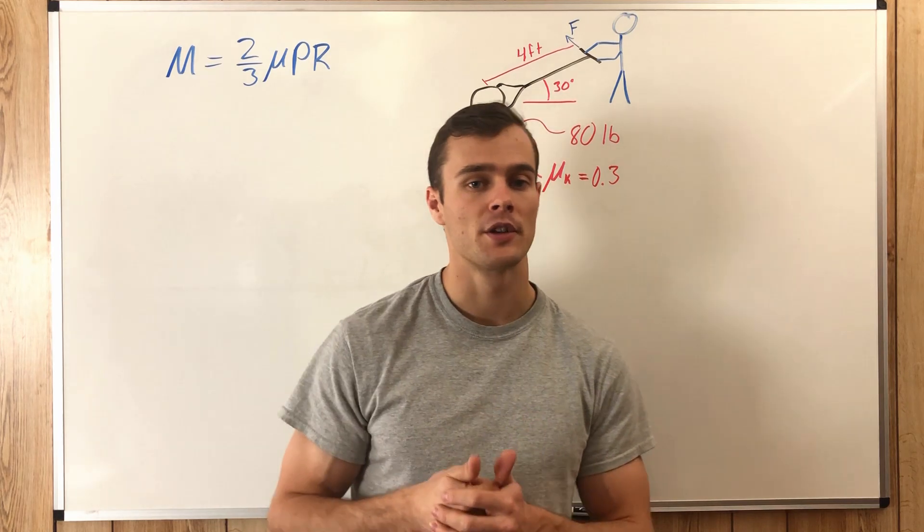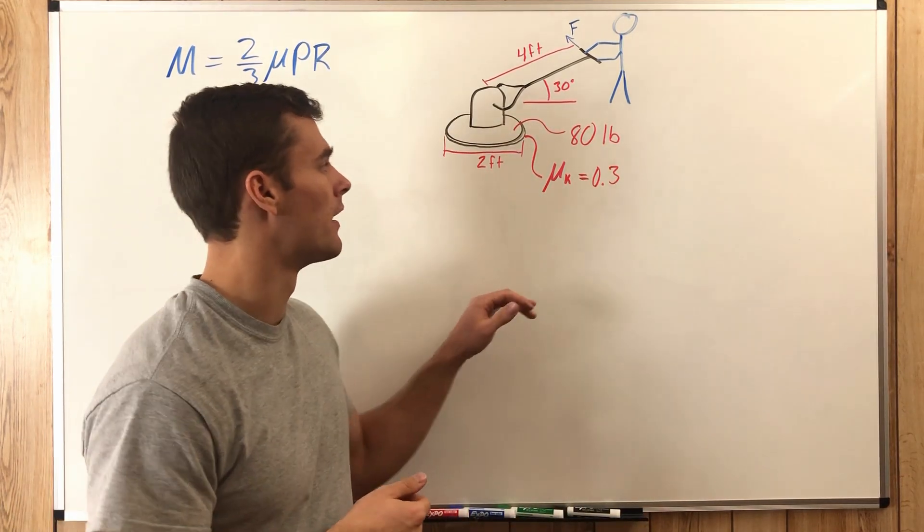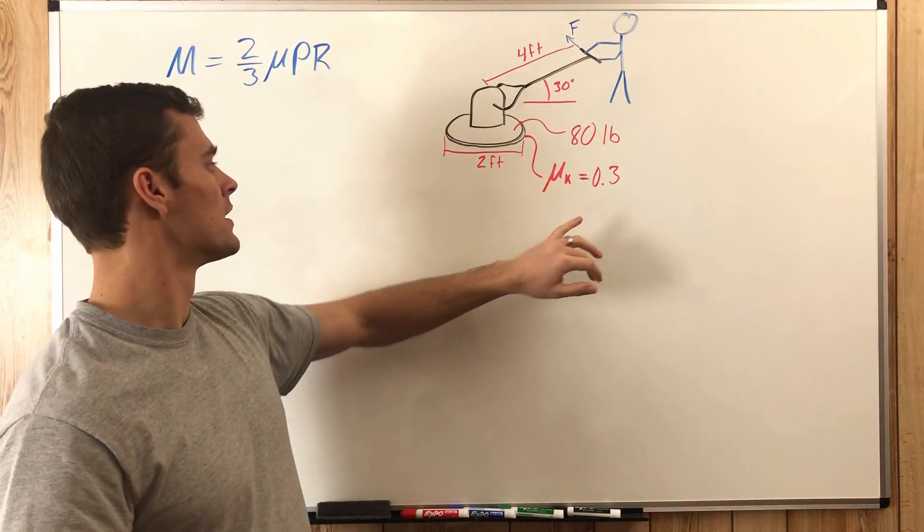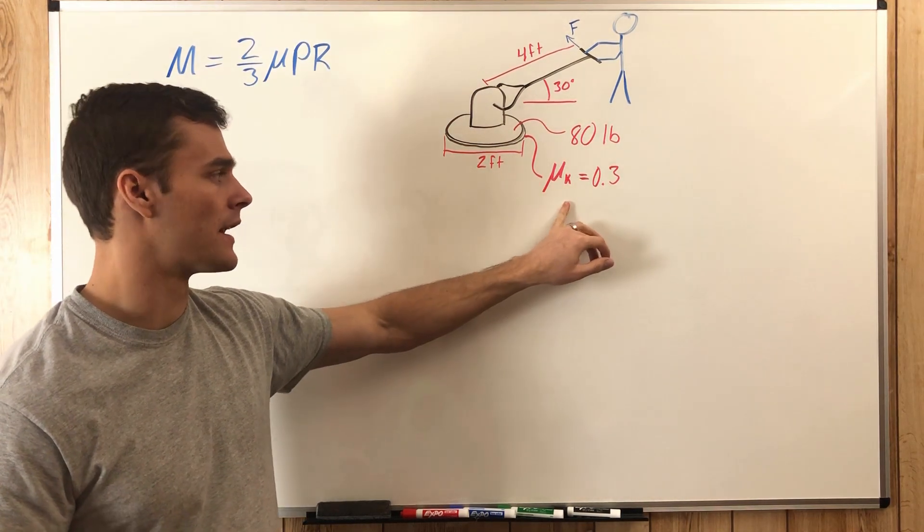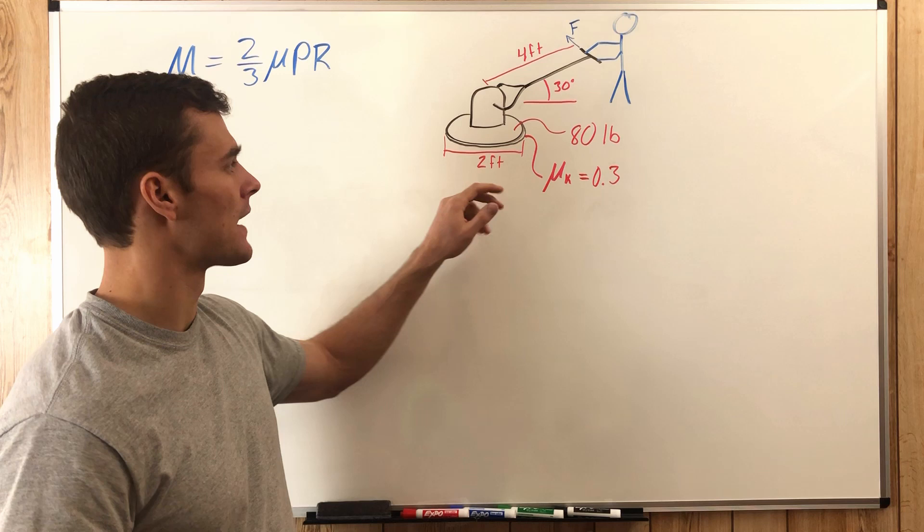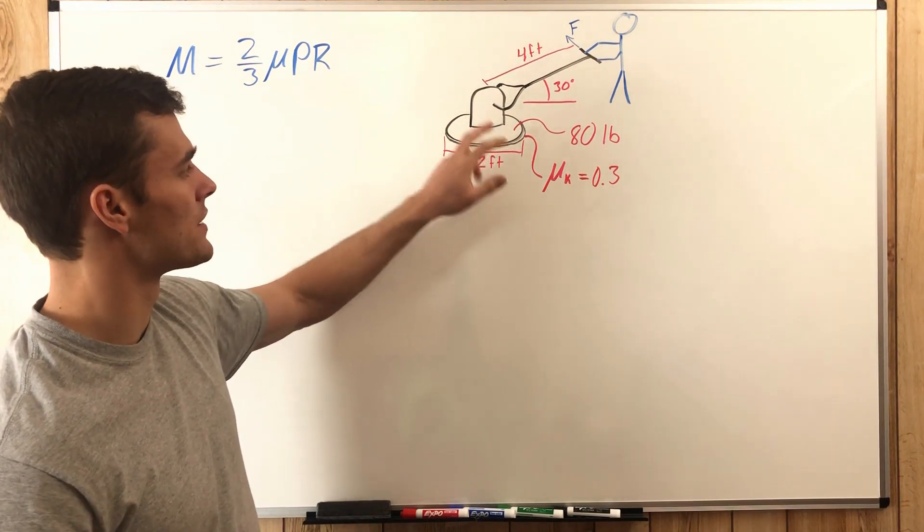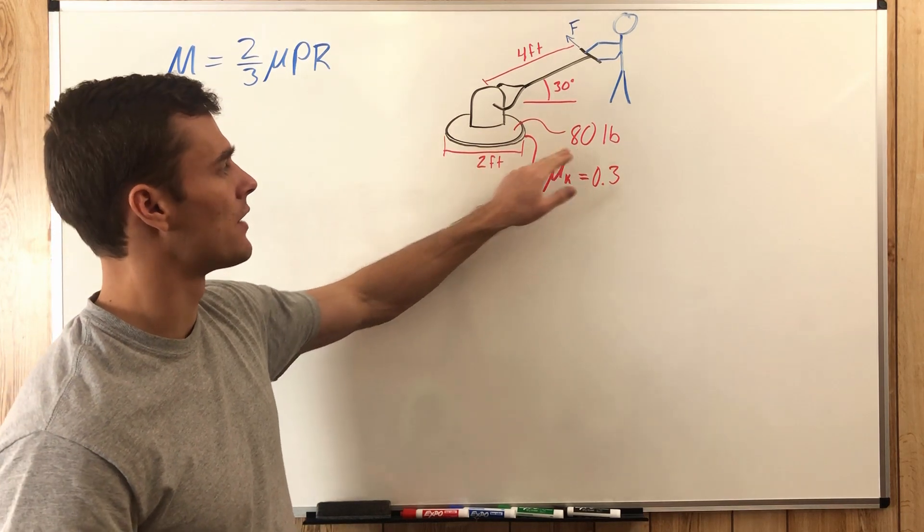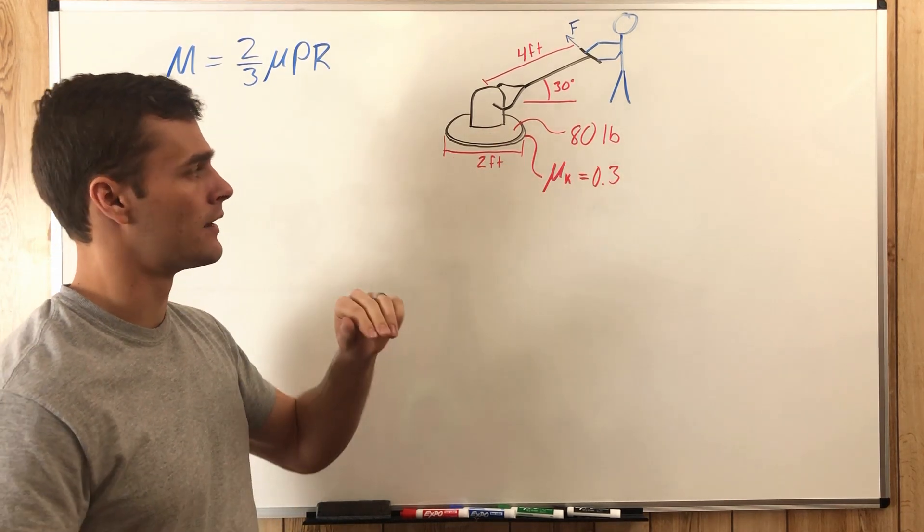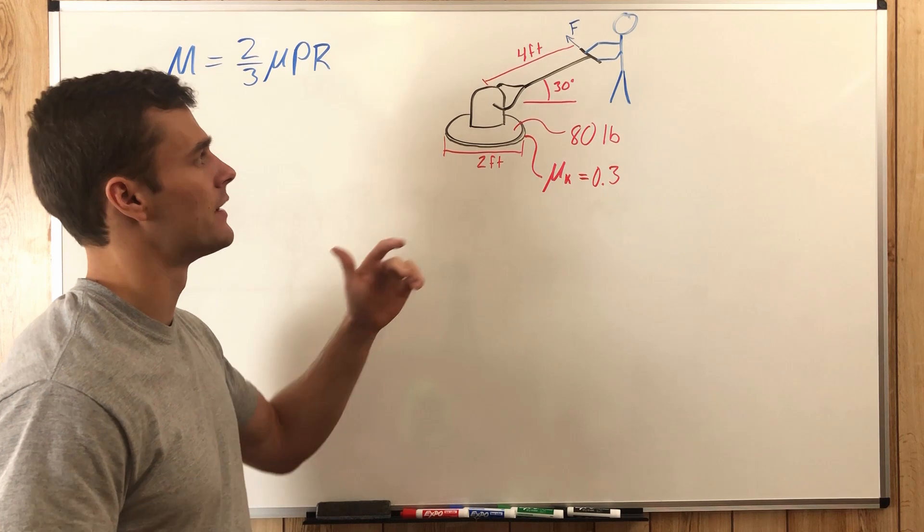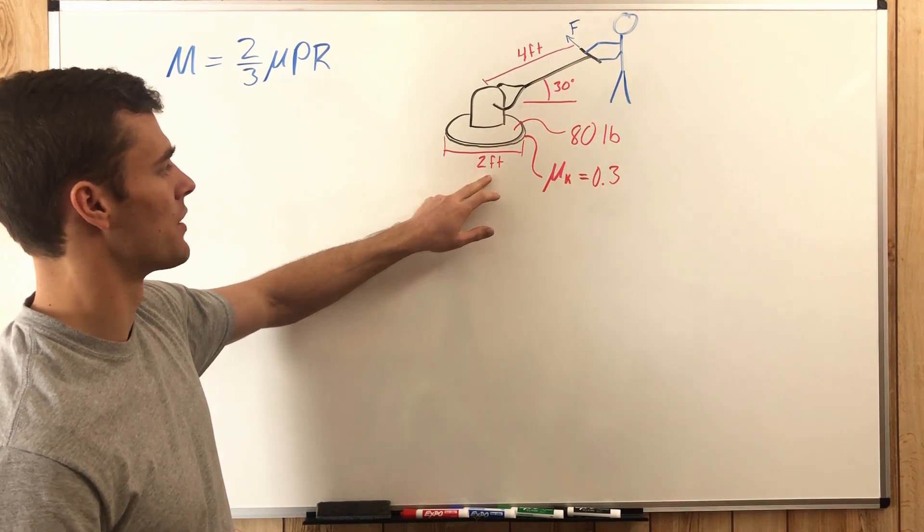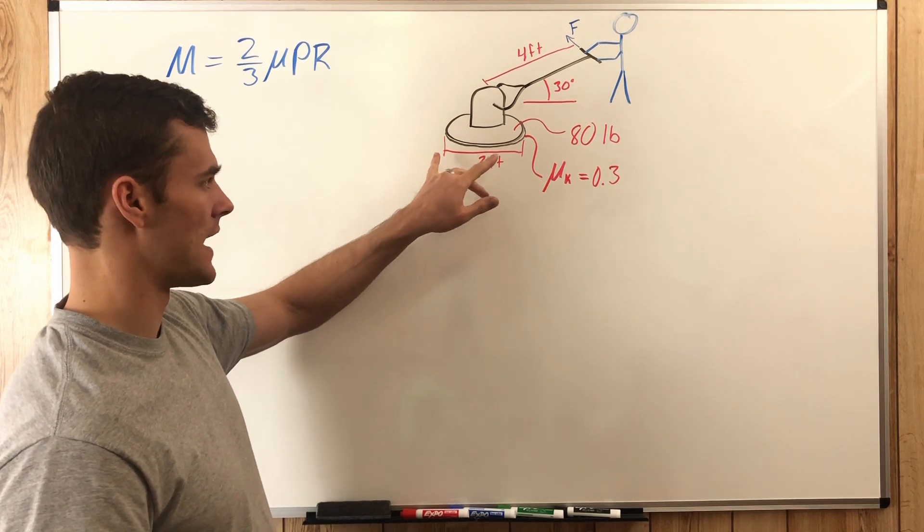So the first thing we want to do is identify our different variables that we need to plug into our equation. We have our coefficient of kinetic friction μ = 0.3, and we have P which is our axial load on the disc, that is 80 pounds which is the weight of the machine, and then your radius r which is going to be half of this diameter of the disc.